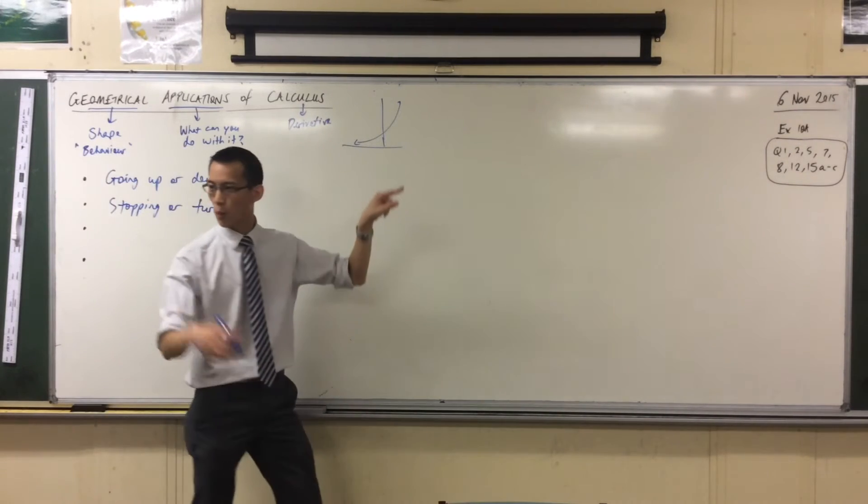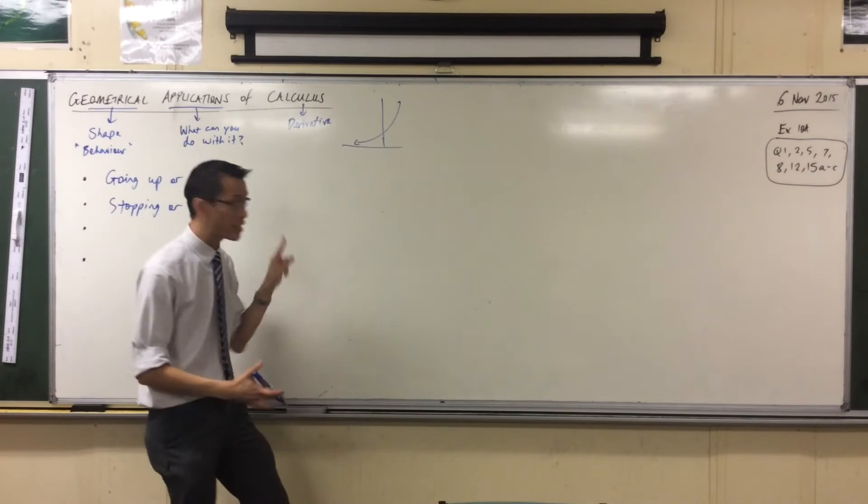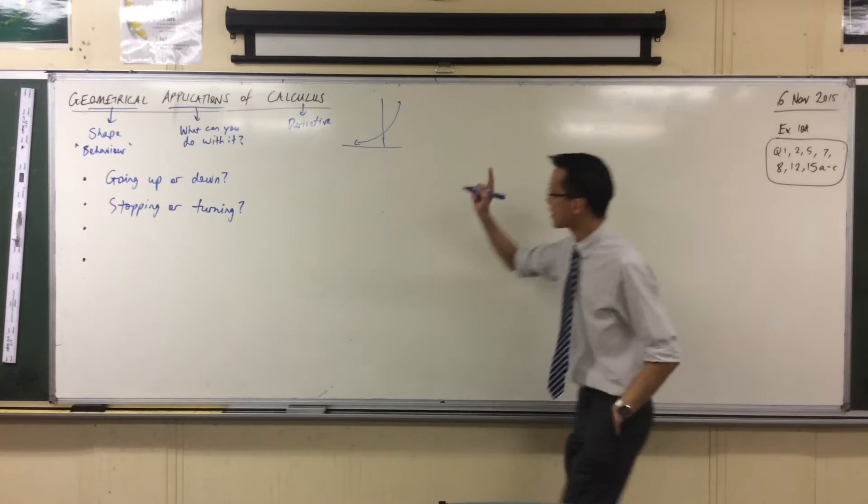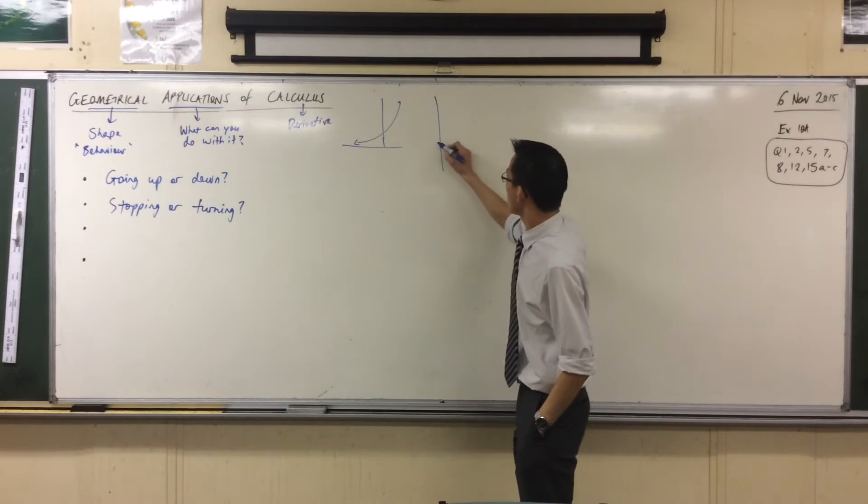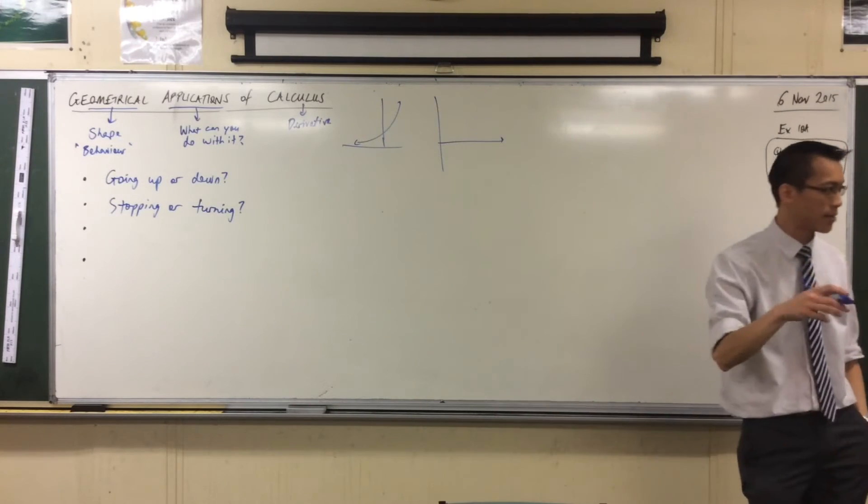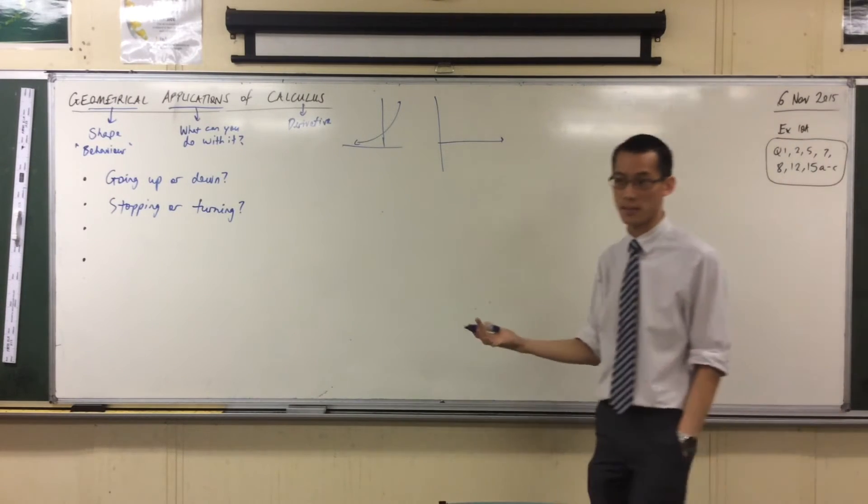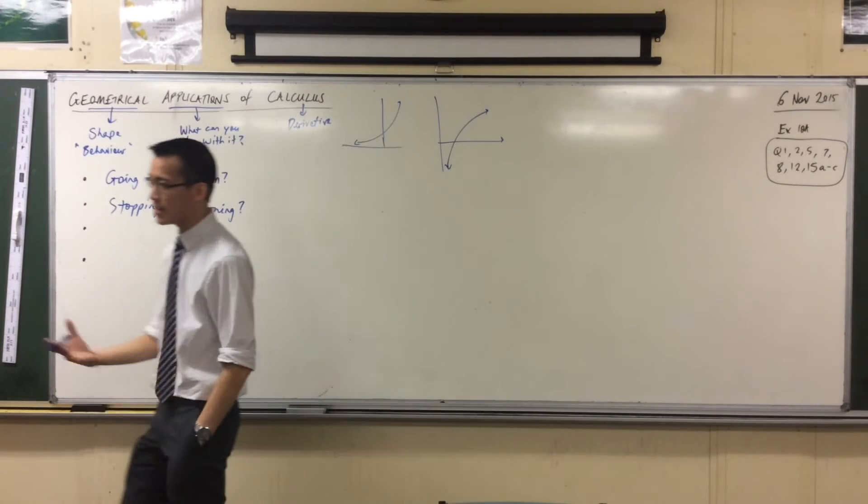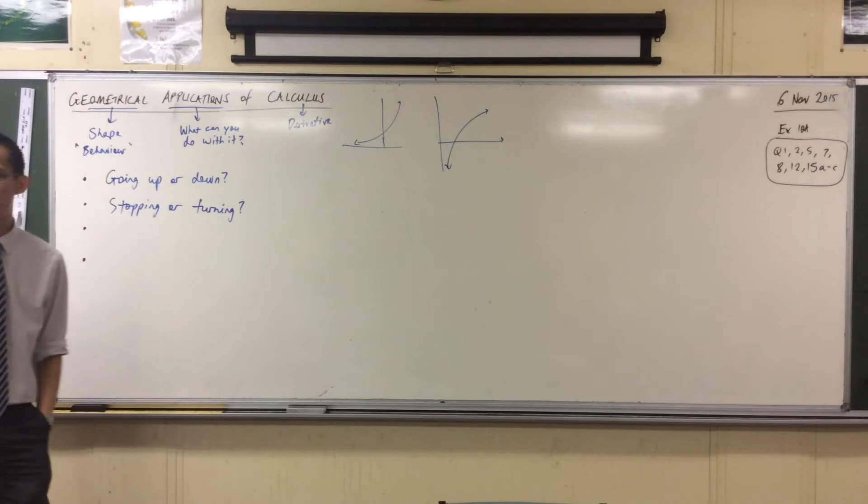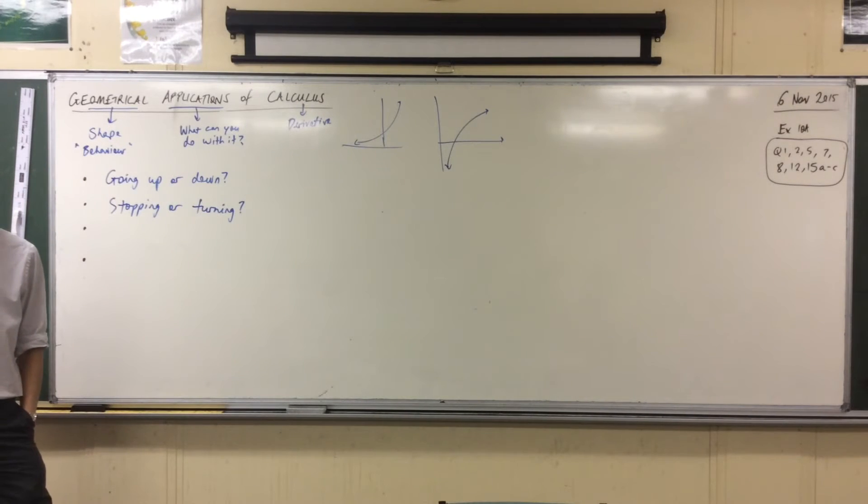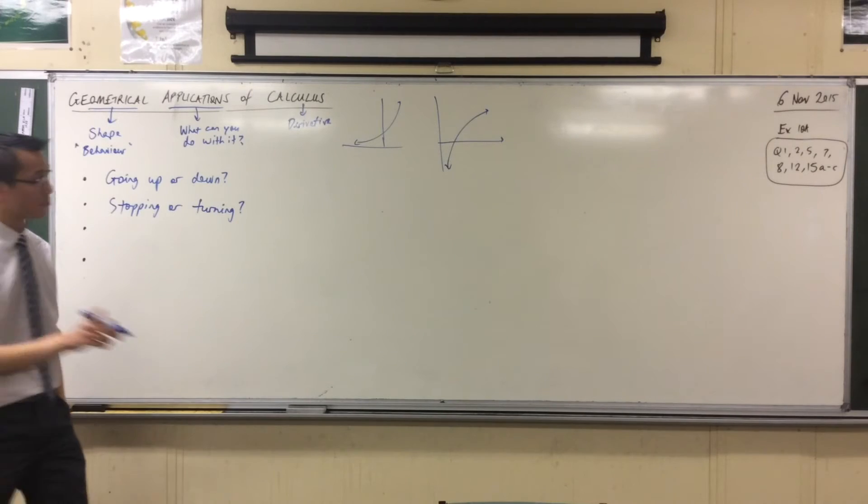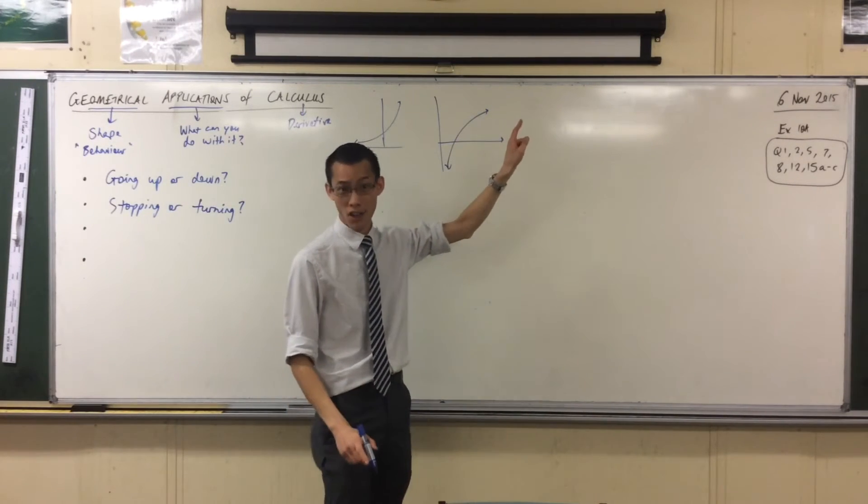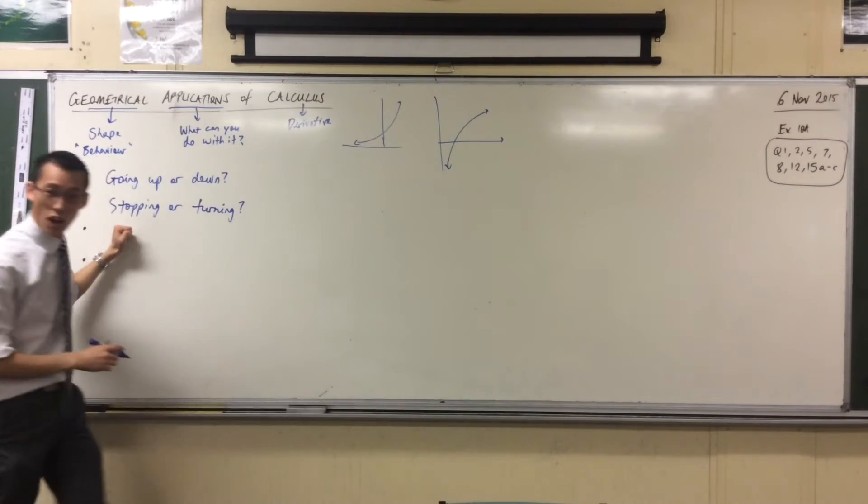As I go from left to right, which is the way I always measure gradient, it's clearly going up. That's the exponential function. I'm going to compare it to its inverse, the log function. Now I want to ask the same question: is it going up or is it going down?